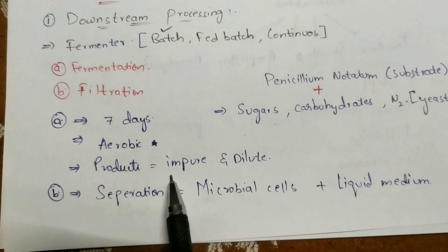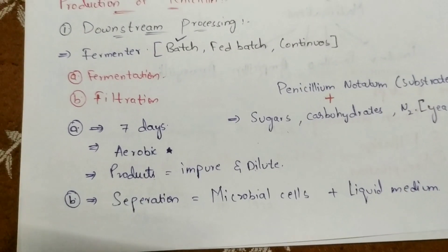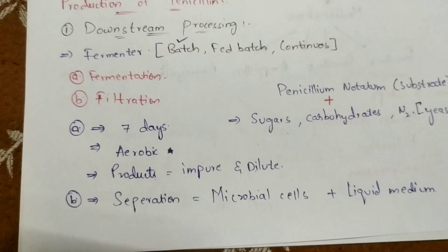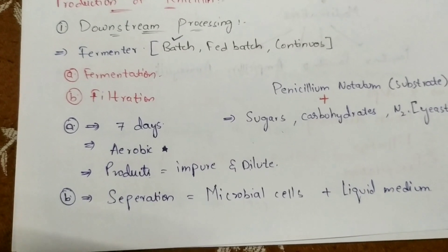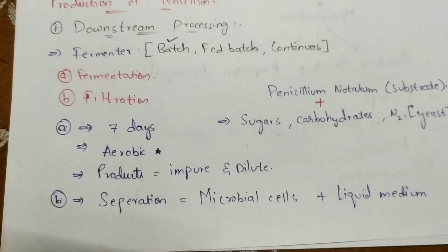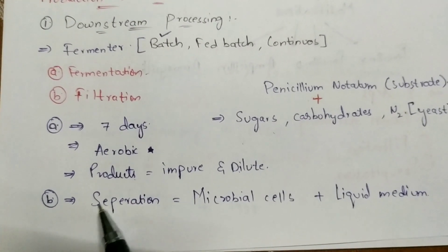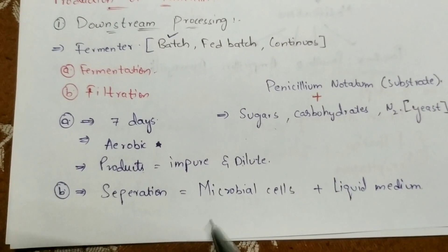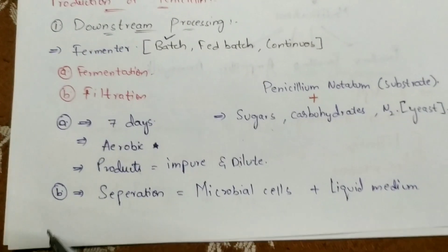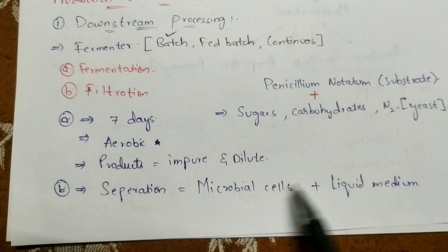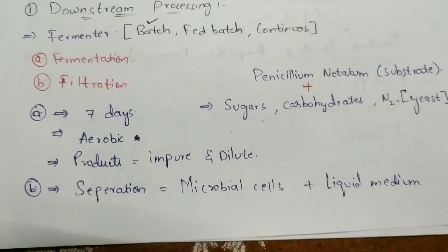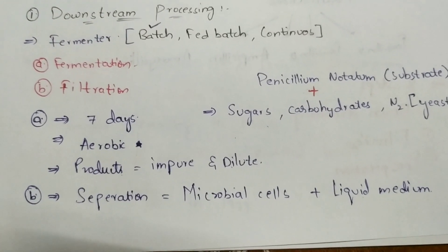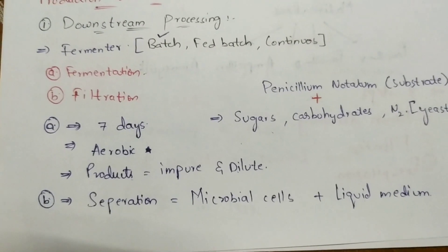After fermentation begins, the final products obtained will be in impure and dilute form. The product is in liquid form, containing microbial cells within the liquid. In the second step, filtration takes place — the separation of microbial cells from the liquid medium. So the microbial cells get separated from the liquid medium in the filtration process.